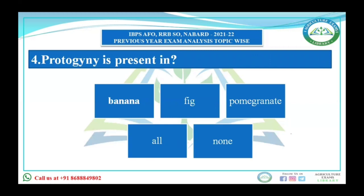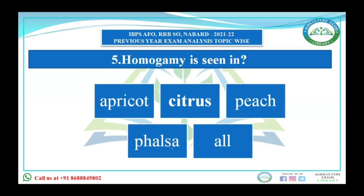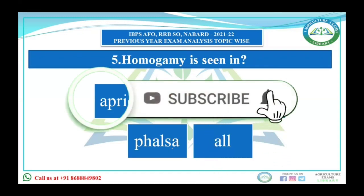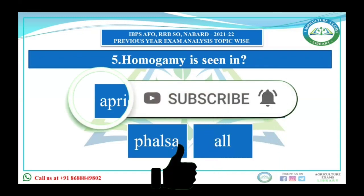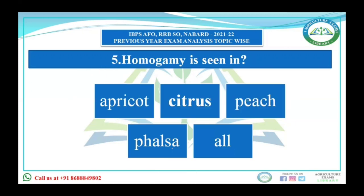All four — unisexuality, chasmogamy, dichogamy, and heterostyly — are factors governing cross-pollination. Protogyny is present in fig, banana, pomegranate, and others — in protogyny, the carpels mature first before the stamens. Homogamy, where both male and female parts mature at the same time, is present in apricot, citrus, dwarf coconut, falsa, peach, and related plants.